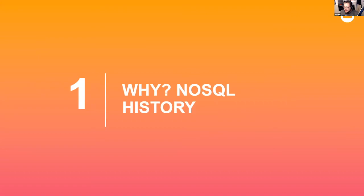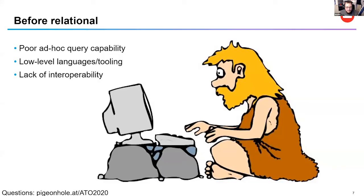Let's talk about NoSQL history at a high level. Before relational databases existed, there were other computerized databases, but they had poor ad hoc query capability. You had to use low-level languages — basically whatever the database was written in — to query data. That lack of interoperability meant that knowledge from one company's database didn't transfer well to another.